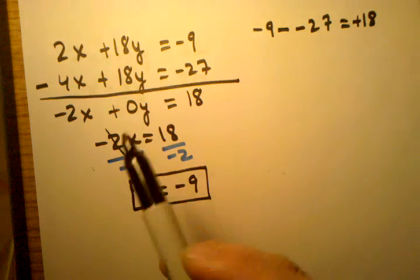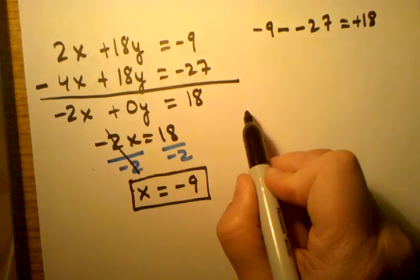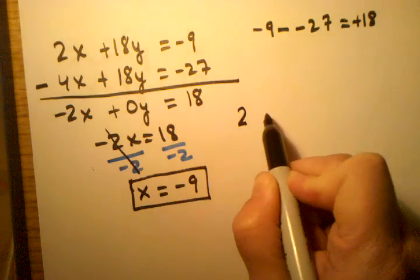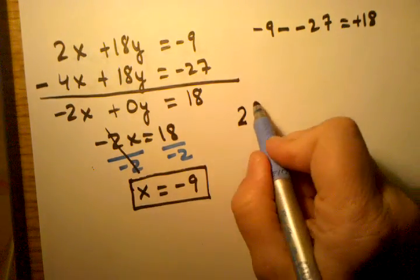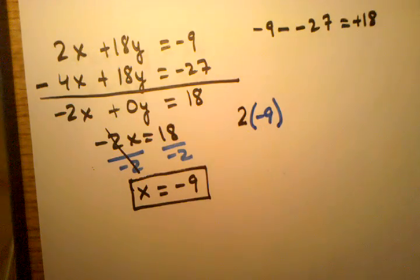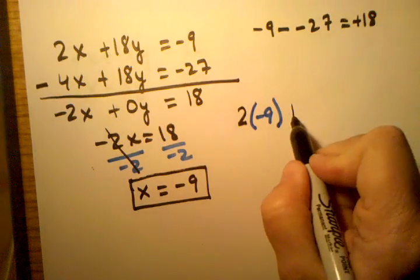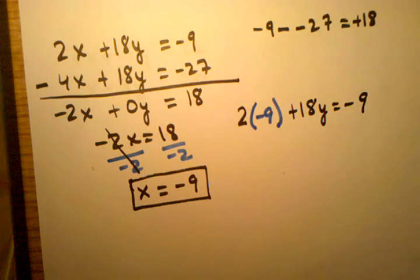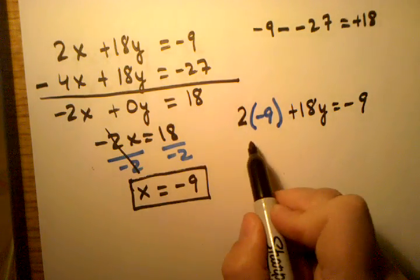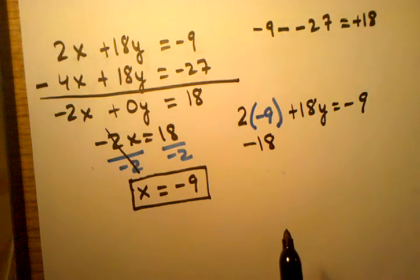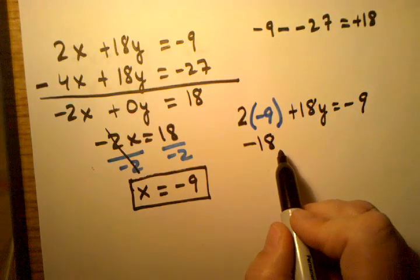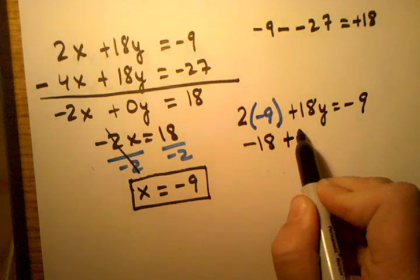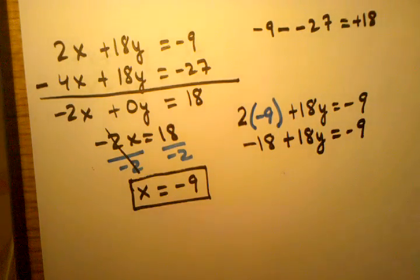For the heck of it, I'm going to choose the first one. So if I choose the first one, I will write 2 times negative 9, that's the number I'm plugging in, plus 18y equals negative 9. Here, I'm going to have negative 18 plus 18y equals negative 9.